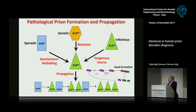In the mutated cases, we have a predisposition due to the genetics to the formation of PRP-SC. In the infectious form, we have direct exposure to a PRP-SC molecule. The combination between one molecule of aberrant conformation of PRP-SC with the normal form of PRP leads to a change in conformation, and then the formation of seed, of oligomers, of pathological prion protein.